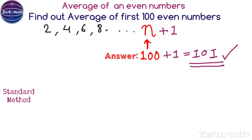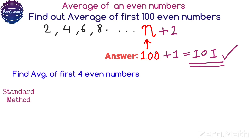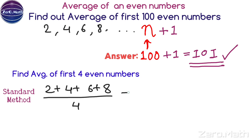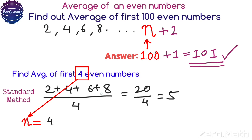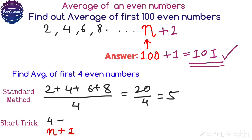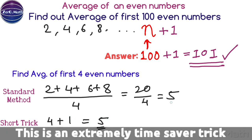Let me prove this with a simple example. Find the average of the first 4 even numbers: 2, 4, 6, and 8. Sum = 20, divided by 4 equals 5. Now applying the trick: N = 4, so N + 1 = 4 + 1 = 5. You can see our formula works absolutely fine and it can really save a lot of time during an examination.